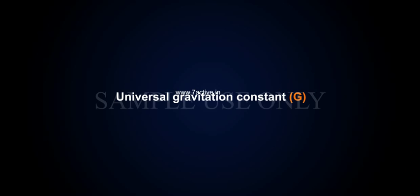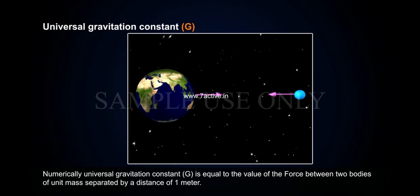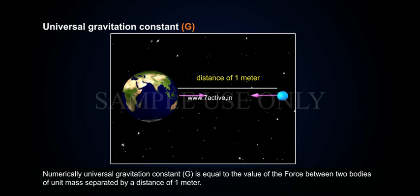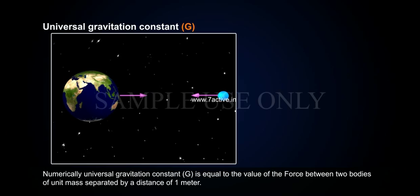Universal gravitation constant (G): Numerically, universal gravitation constant G is equal to the value of the force between two bodies of unit mass separated by a distance of 1 meter. The expression for Newton's law of universal gravitation is F = G M₁ M₂ / R², where G is the constant called universal gravitational constant.